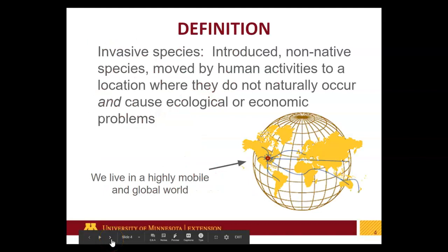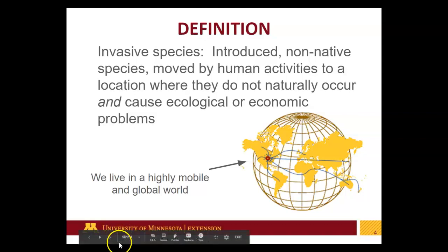So quickly, let's get started. Invasive species are any species that is introduced, non-native, often moved by humans, and causes ecological and economic problems. We live in a really mobile society, and that society today enables invasive species to move around very quickly, much more quickly than they would have been able to do historically.